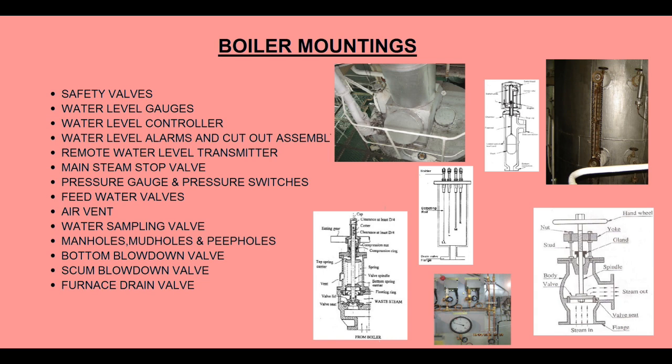Scum valves are fitted to the steam drum and connected with a shallow dish positioned internally at the normal water level. This is to remove oil or scum from the surface of the water. Air vents are fitted to the highest point of the boiler drum in order to release air when filling the boiler, when initially raising steam, or to prevent forming a vacuum when totally depressurizing the boiler. Pressure gauges and other instrument connections are fitted as required to the steam drum and superheater outlet header to provide the necessary pressure readings.